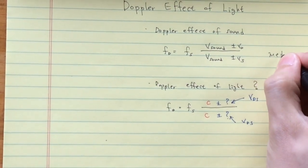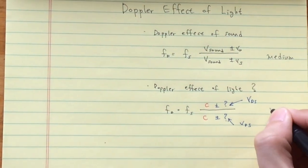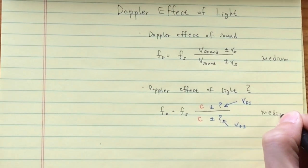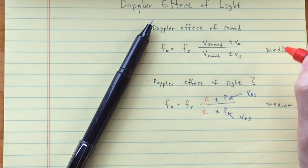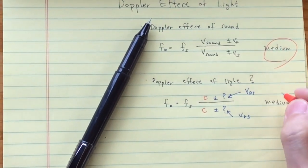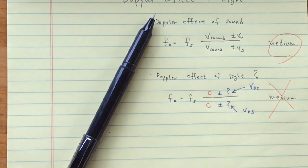Why is that so? For sound, the velocities of sound detector and the source are all measured with respect to the medium. But for light, only relative velocity is meaningful because there is no medium.